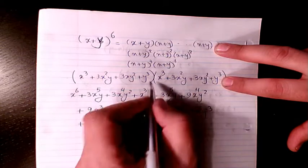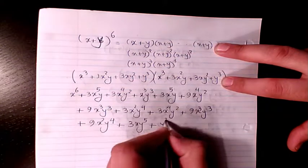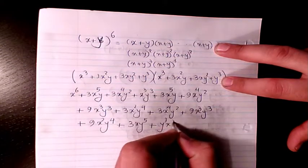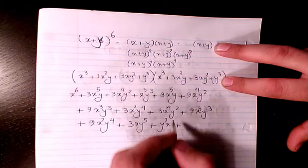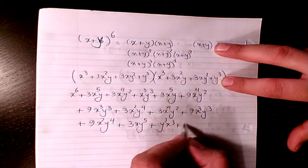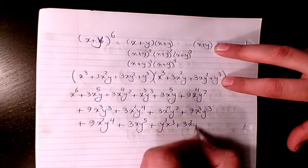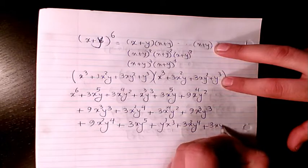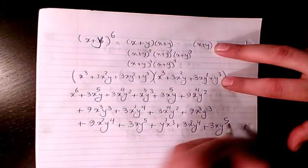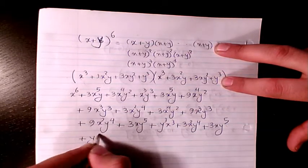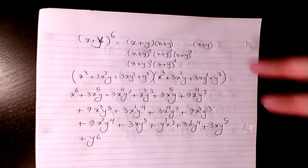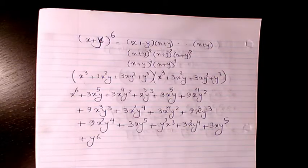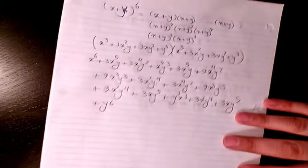And finally we have y cubed times x cubed, y cubed times 3x squared y, y to the power of 5, and then y to the power of 6. So now I need to simplify it.